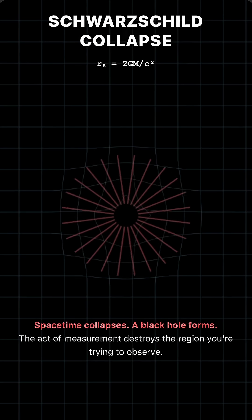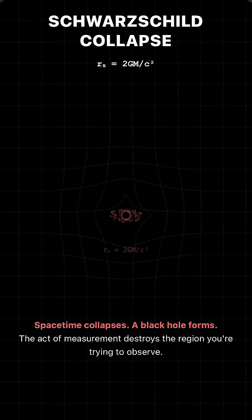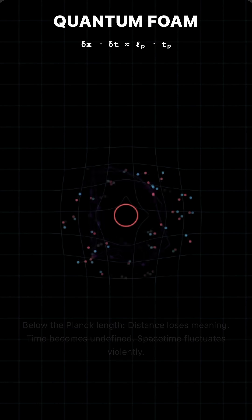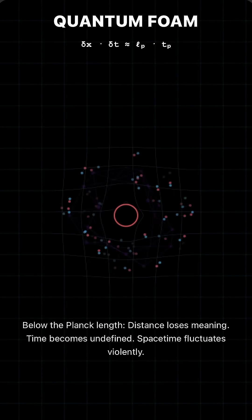At that moment, the act of measurement destroys the region you're trying to observe. You don't see smaller structure. You create an event horizon.